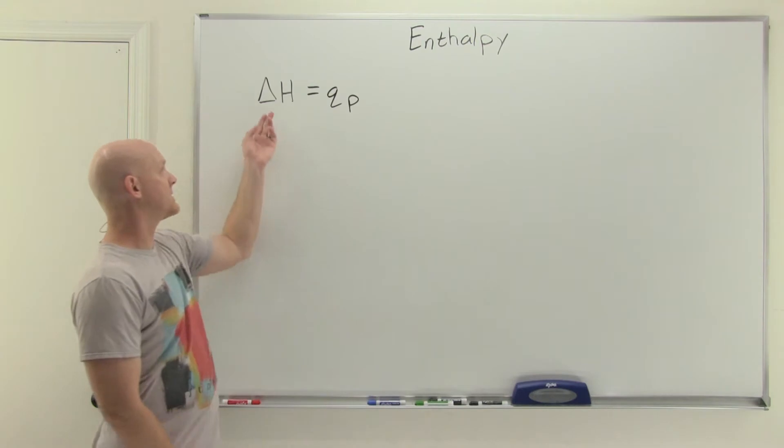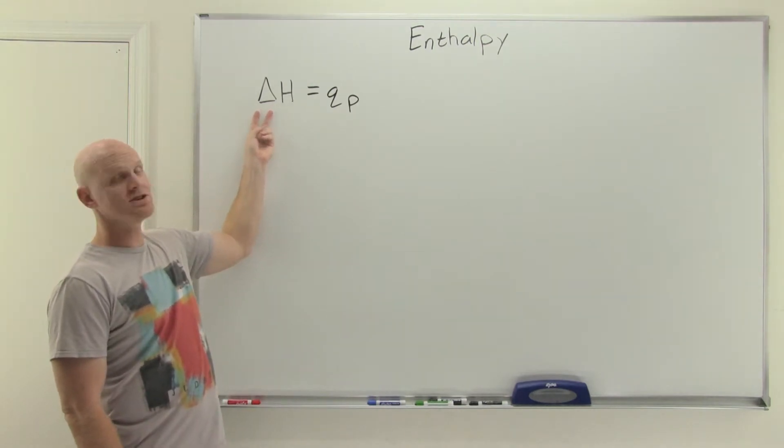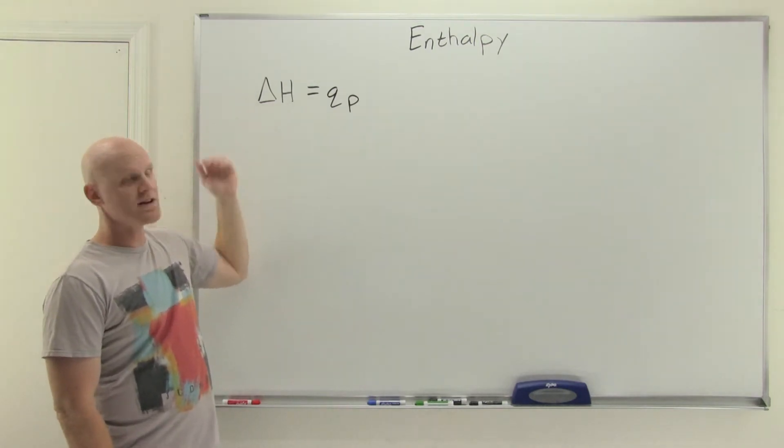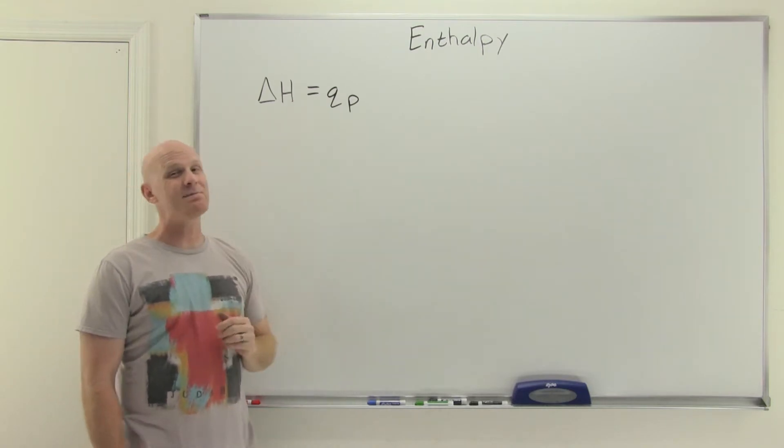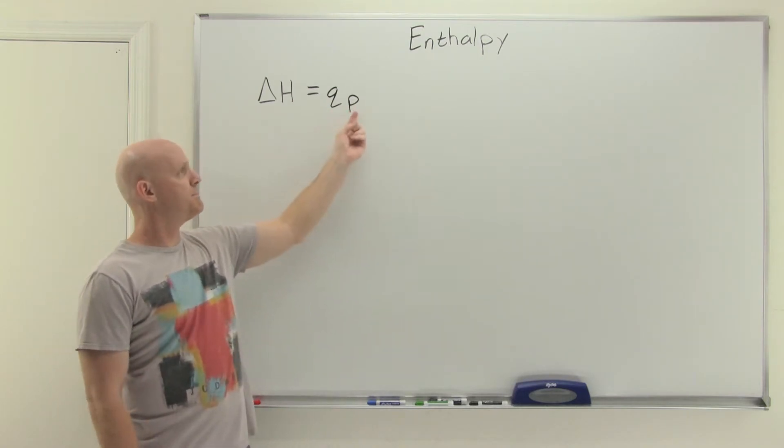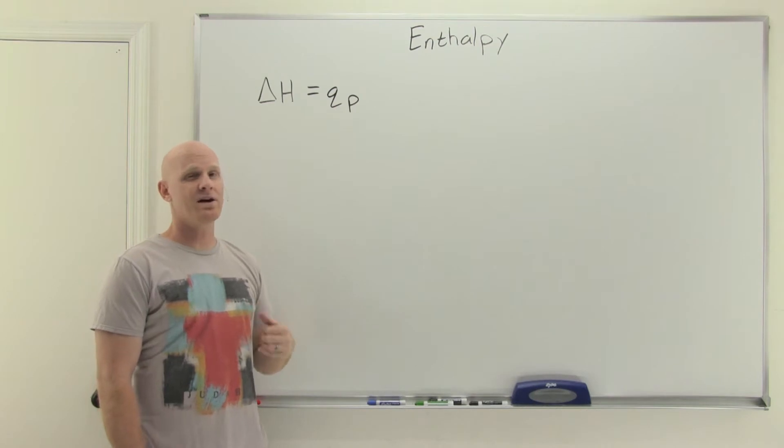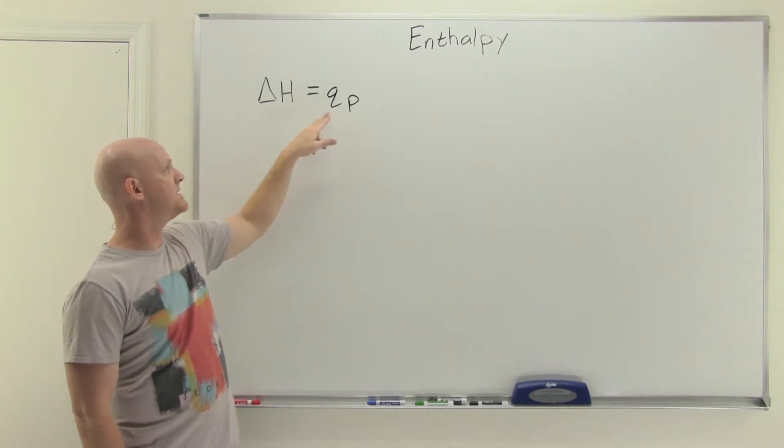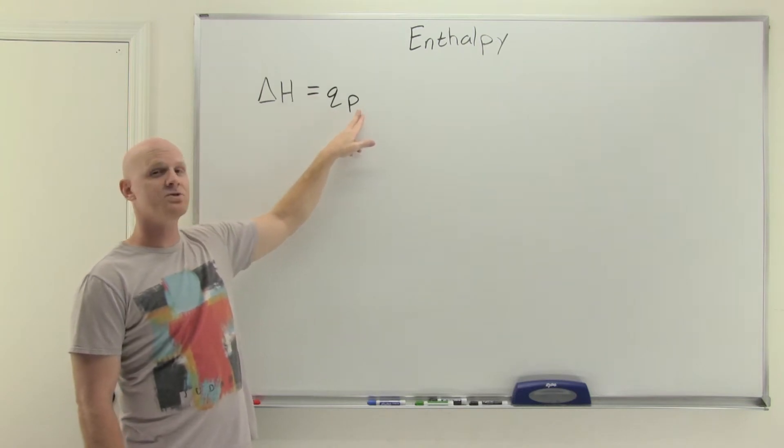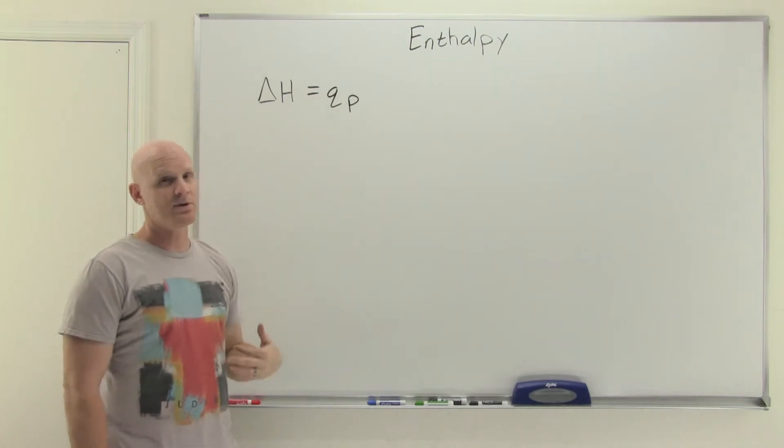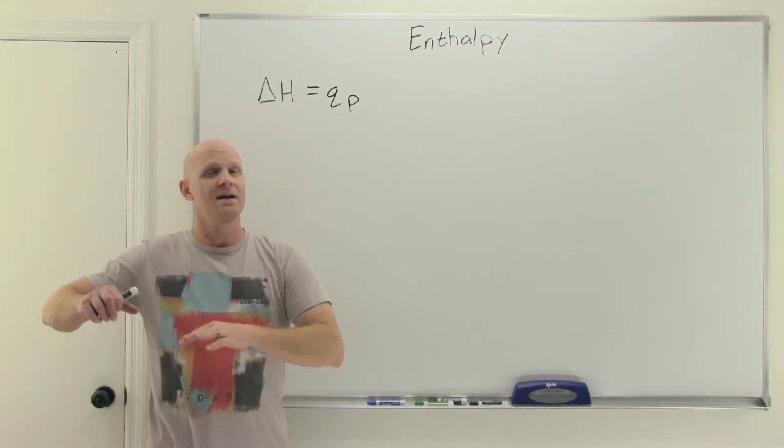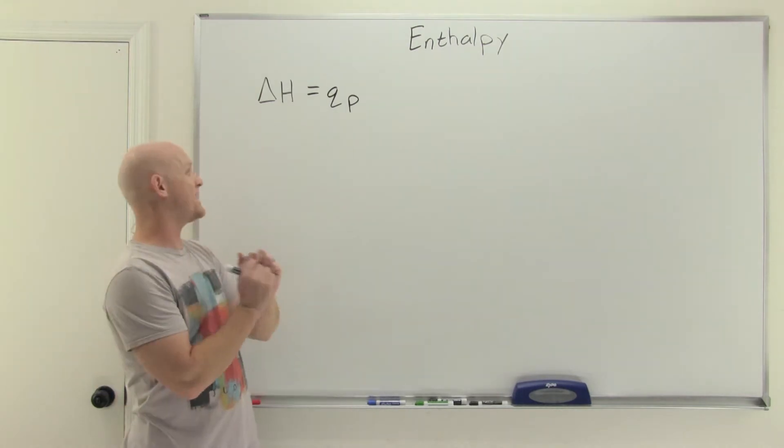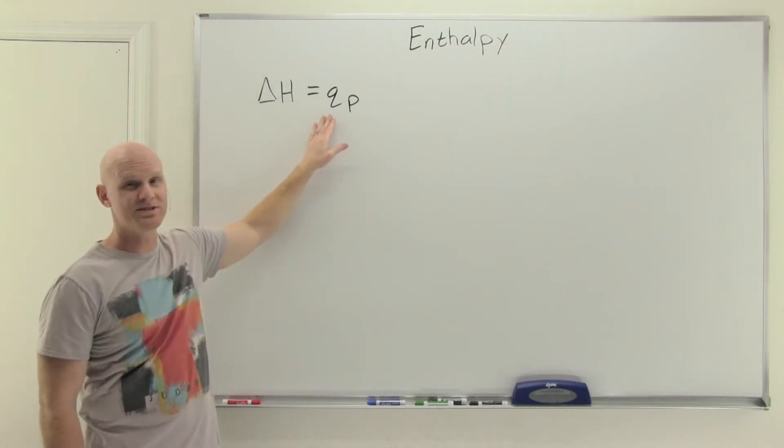So enthalpy here, and certainly we've been looking at the enthalpy change, delta H, and it turns out it's related to heat, but it's not exactly the same thing as heat unless a reaction or process is carried out at constant pressure. This is our working definition. Enthalpy is the same thing as heat for any process or reaction carried out at constant pressure. Now there's a more complicated definition for enthalpy you would study in a more advanced course, but this is as far as we're going to take it.